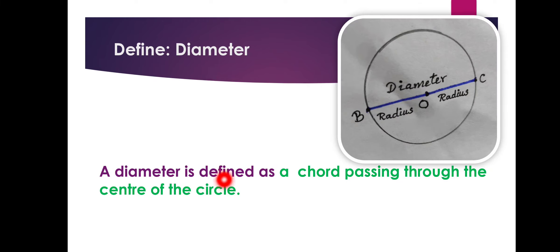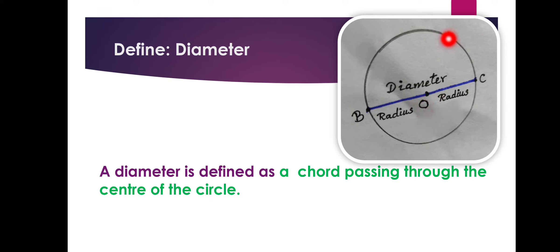A diameter is defined as a chord passing through the center of the circle. So, the diameter is also a line segment that connects two points on the circle — here we have two points, B and C — and it is passing through the center of the circle. Any chord passing through the center of the circle, in any direction — horizontally, vertically, or any slanting direction — those line segments passing through the center of the circle are called diameter.